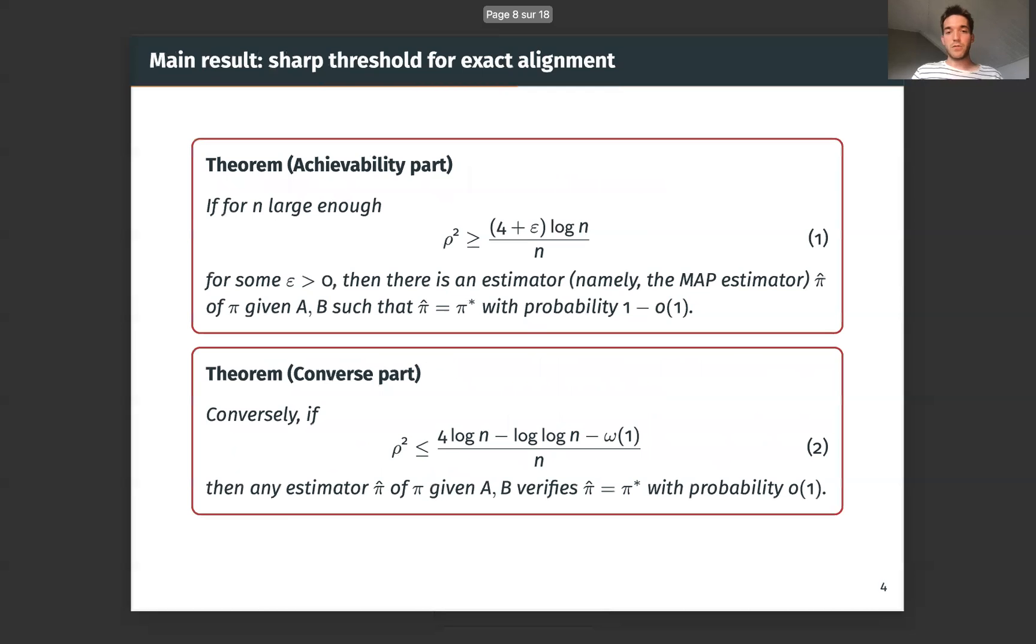So back to our results. This result may seem a little bit counterintuitive at the first sight, because we here allow, we can allow ρ to tend to 0, for instance, not too rapidly, but we can allow it to tend to 0 and still claim that it is possible to recover exactly our underlying permutation. So here we may think of something a bit crazy because if ρ is going to 0, well, the matrices will be really different. And it may seem really difficult to align them.